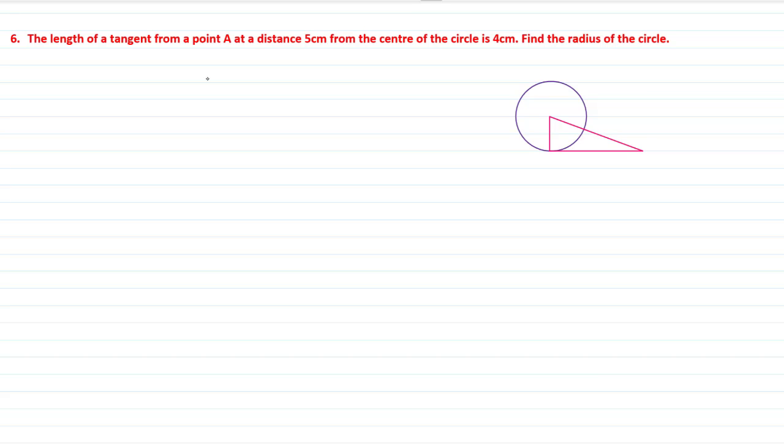Ok dear students, now we will solve 6th main. The length of a tangent from a point A at a distance 5 cm from the center of the circle is 4 cm. Find the radius of the circle.